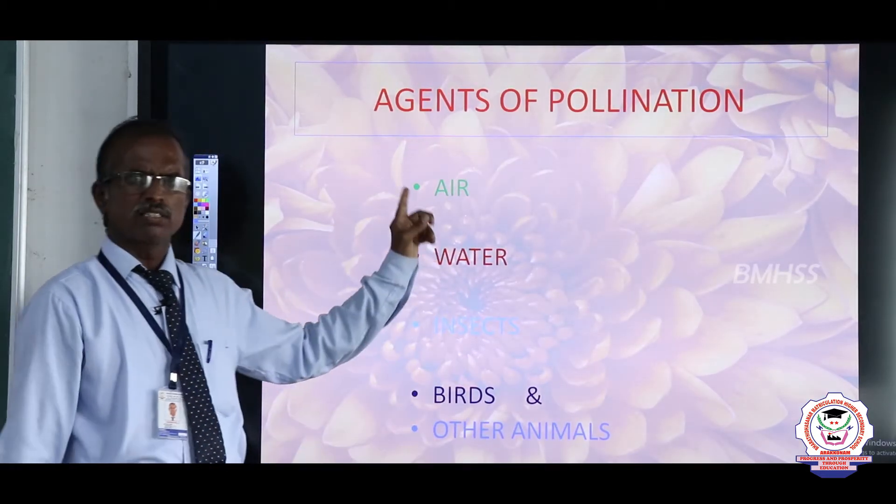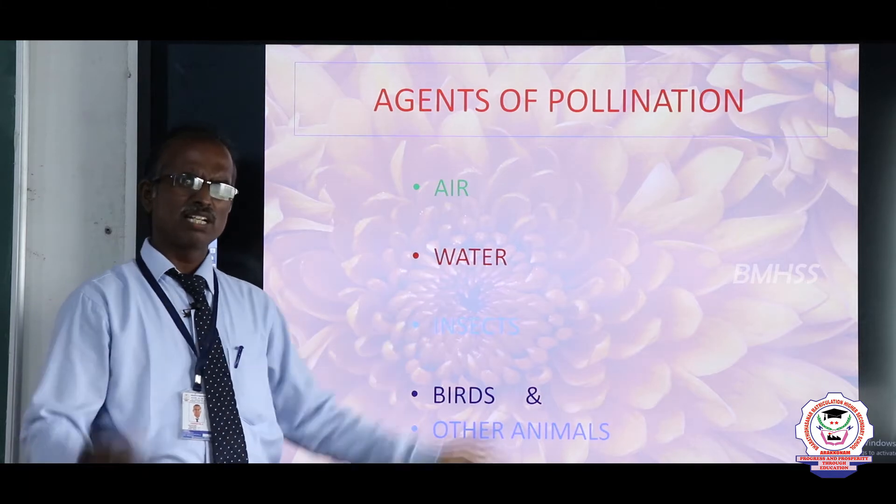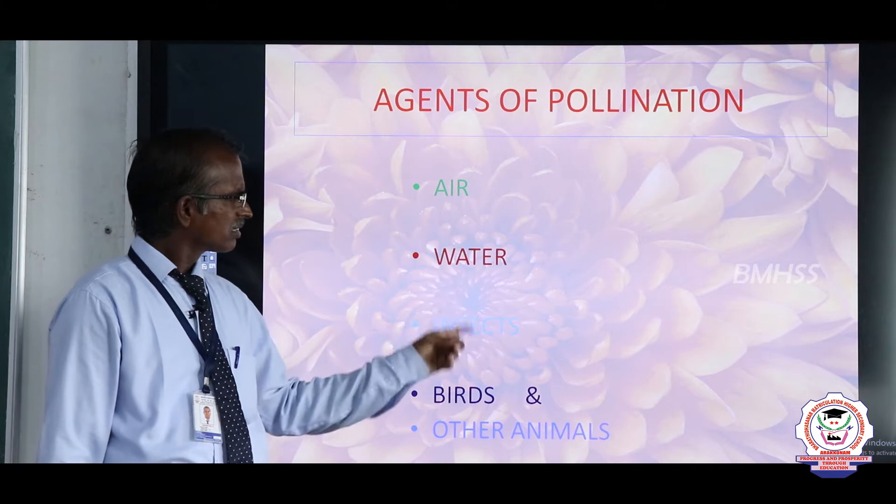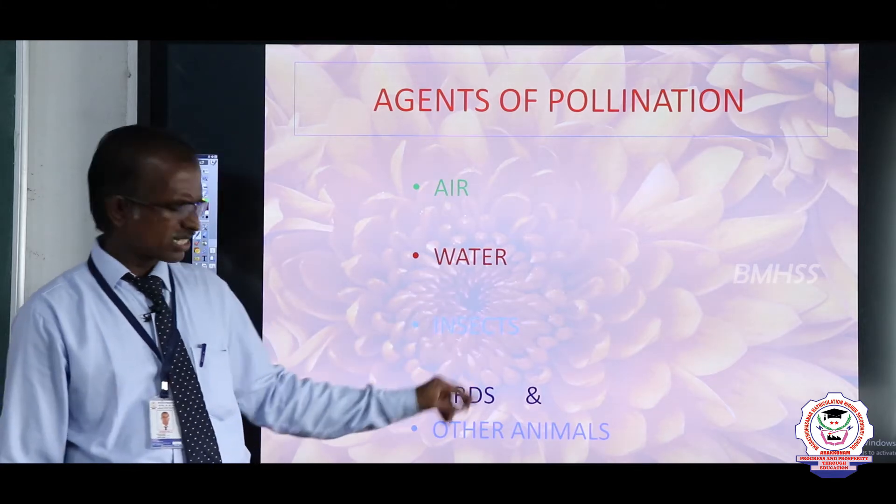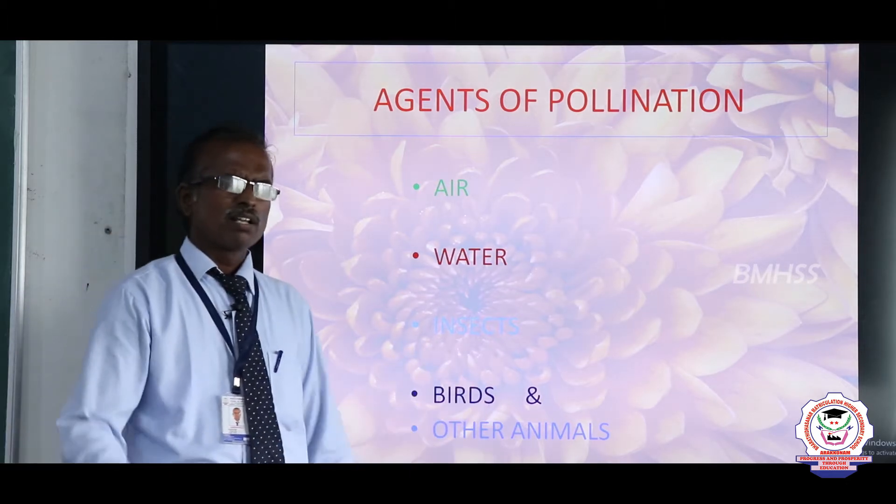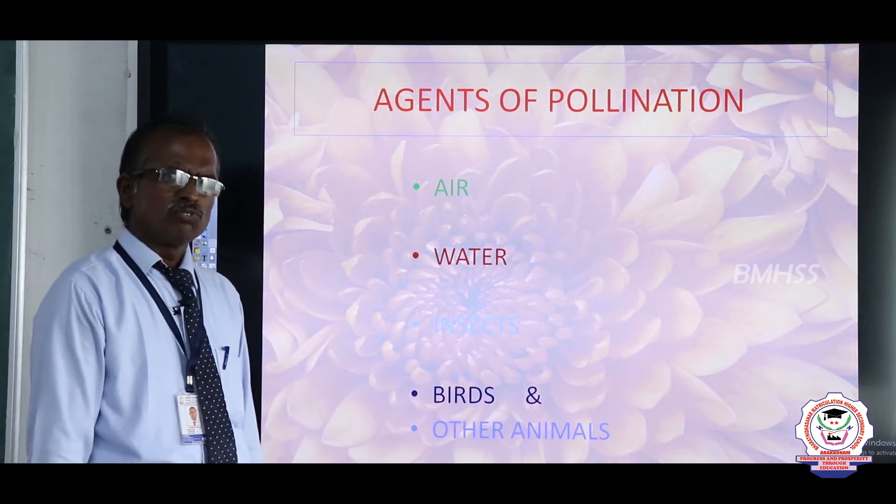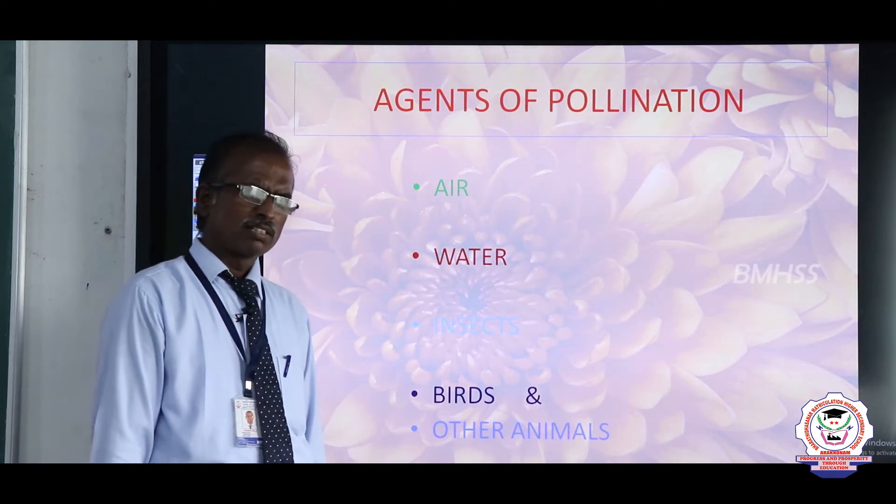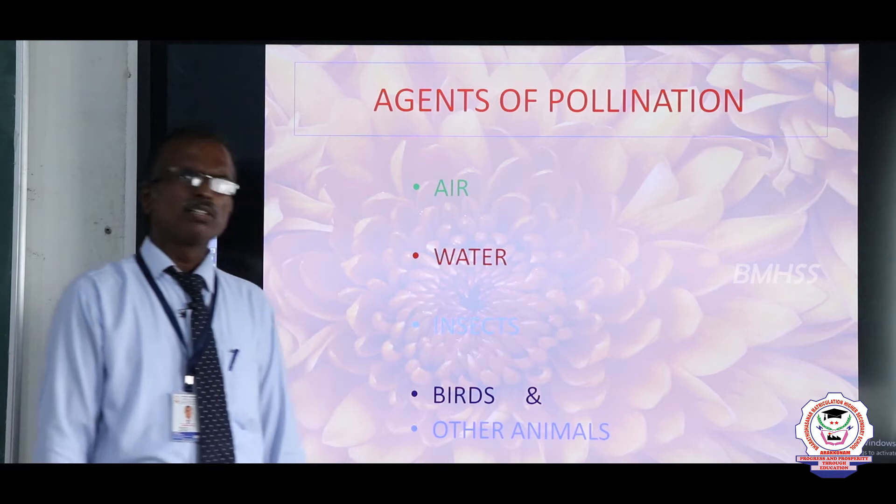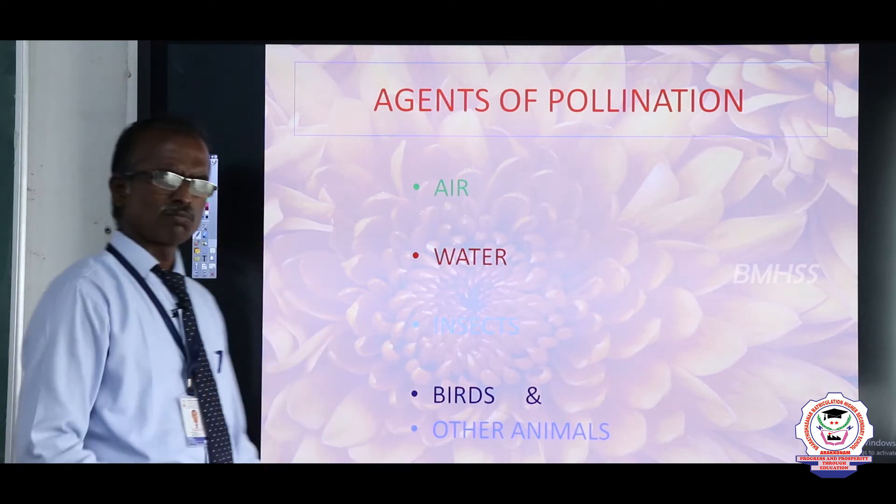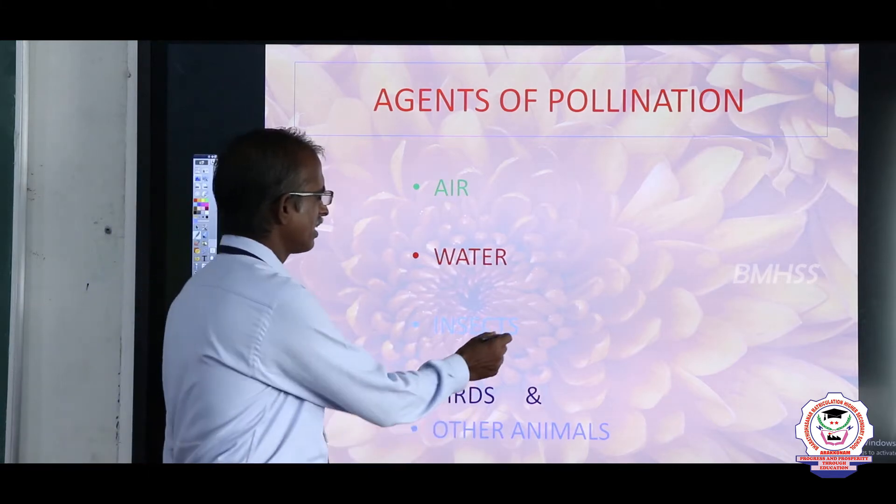Cross-pollination involves various external agents, namely: air or wind, water, insects, birds and other animals. Birds play a very important role in transfer of pollen grain, and most of the flowers are pollinated by insects.